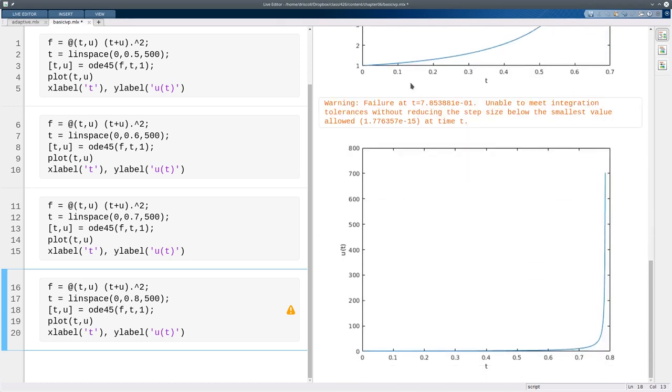Suddenly I've gotten this message about a failure. Now, when you see this particular failure, unable to meet integration tolerances without reducing the step size below the smallest value, that could mean there's a bug in your code. But in this case, that's not what's happening here. This is, if you like, sort of a bug in the IVP, or it's a feature of the IVP.